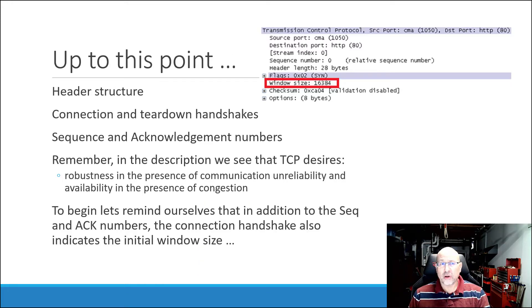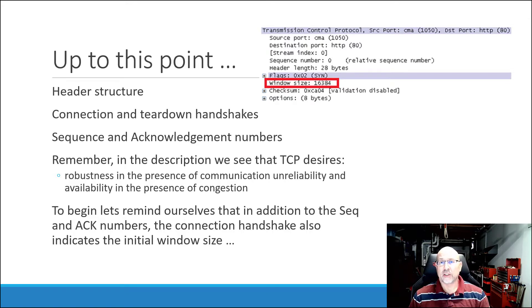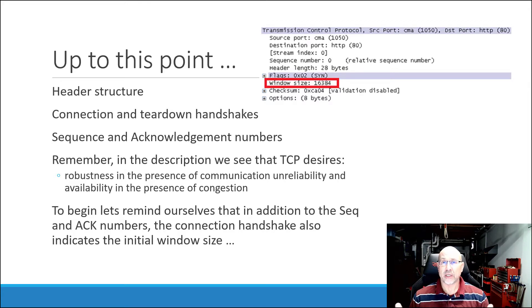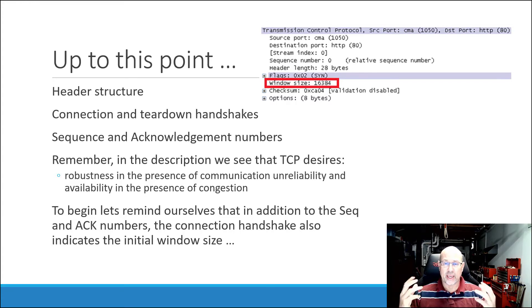So what have we talked about so far? We know how the TCP header is constructed — we've got that 20 bytes with all of those fields that include sequence and acknowledgement numbers, source and destination port, the flags, and all those kinds of things. We also know that TCP starts off with a setup handshake and a teardown handshake at the end. We also know how the sequence and acknowledgement numbers work. But this video is really about robustness and how to handle the problem of congestion.